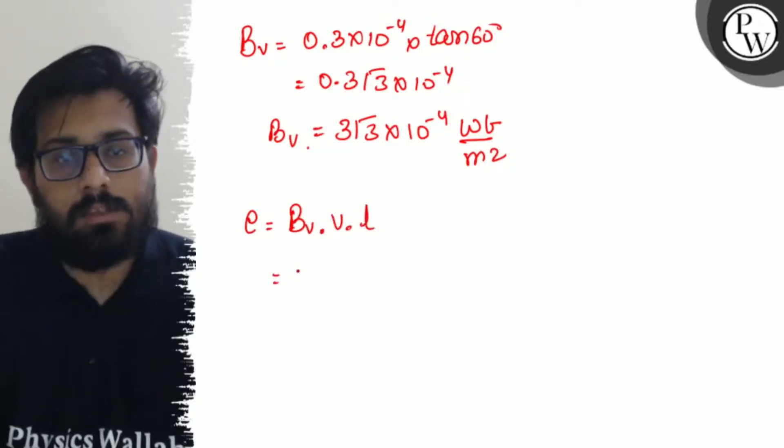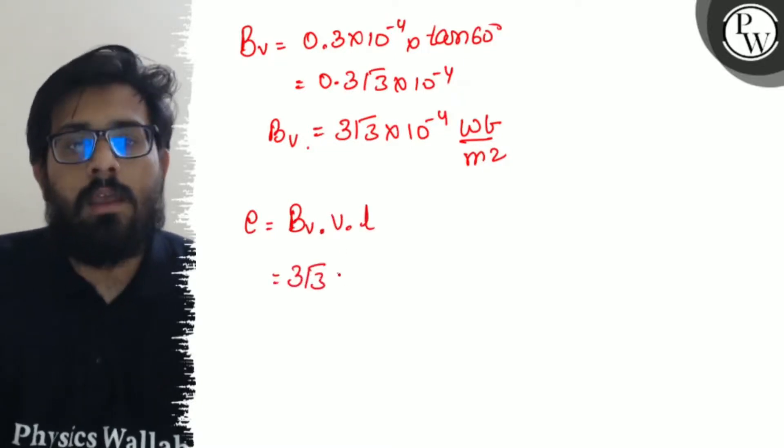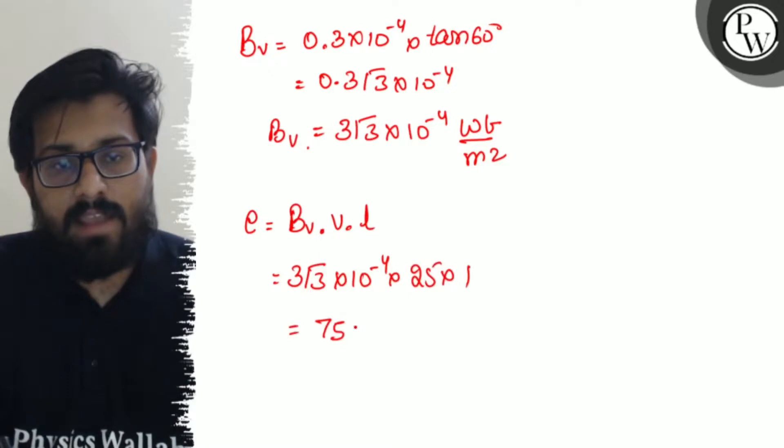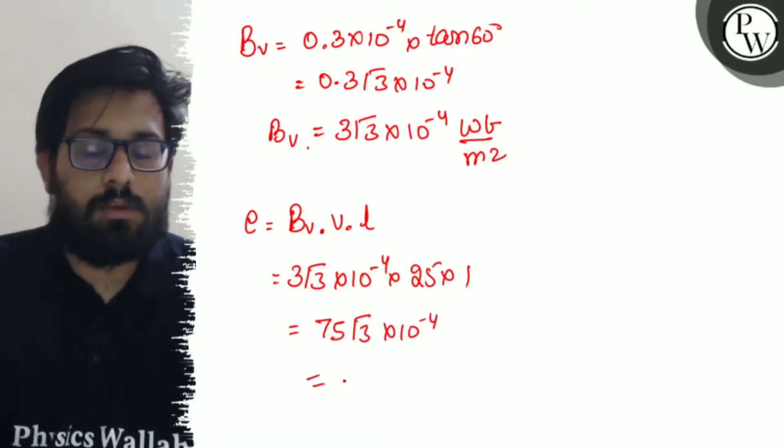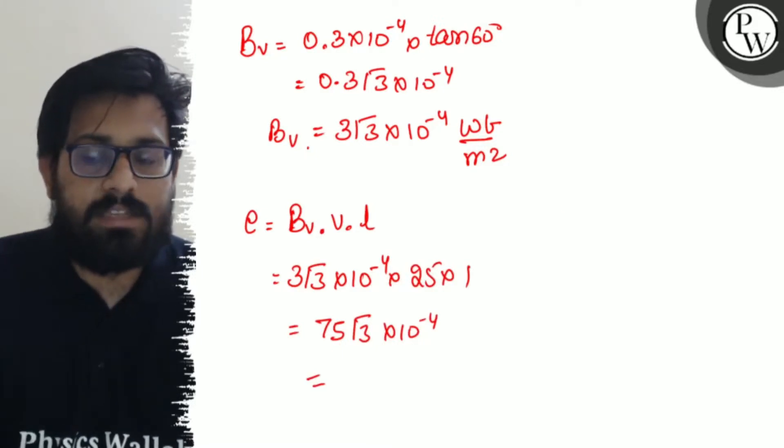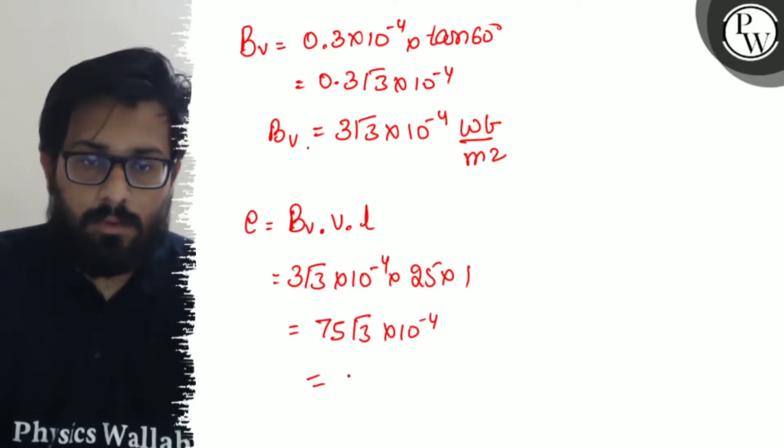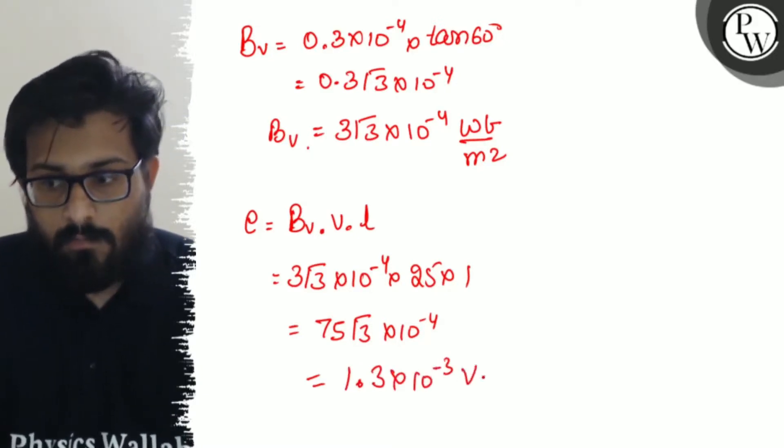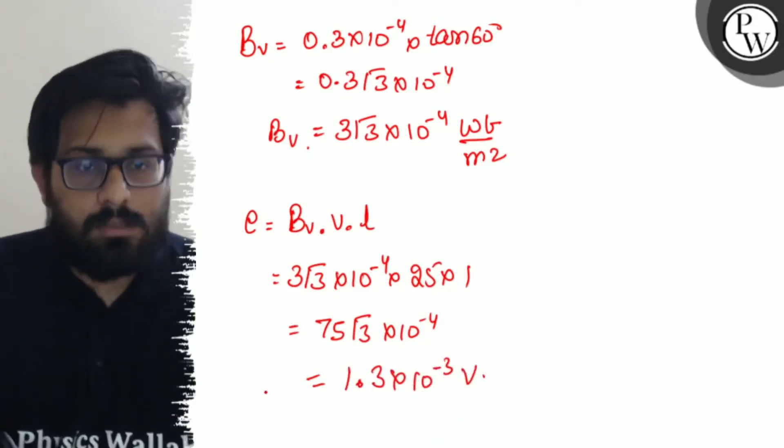So this can be written as 75√3×10⁻⁴. The EMF ε equals Bv·v·l, which equals 3√3×10⁻⁴×25×1, giving 75√3×10⁻⁴.